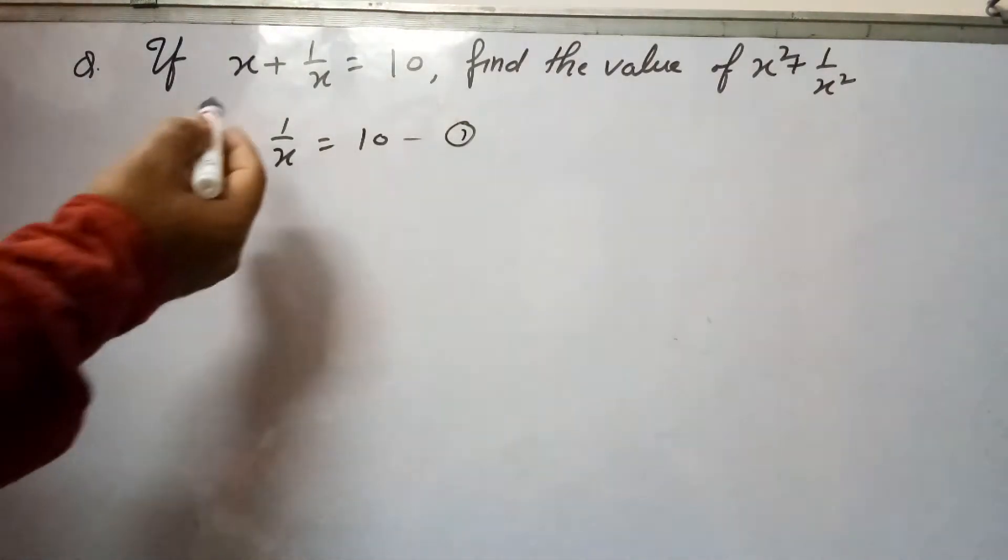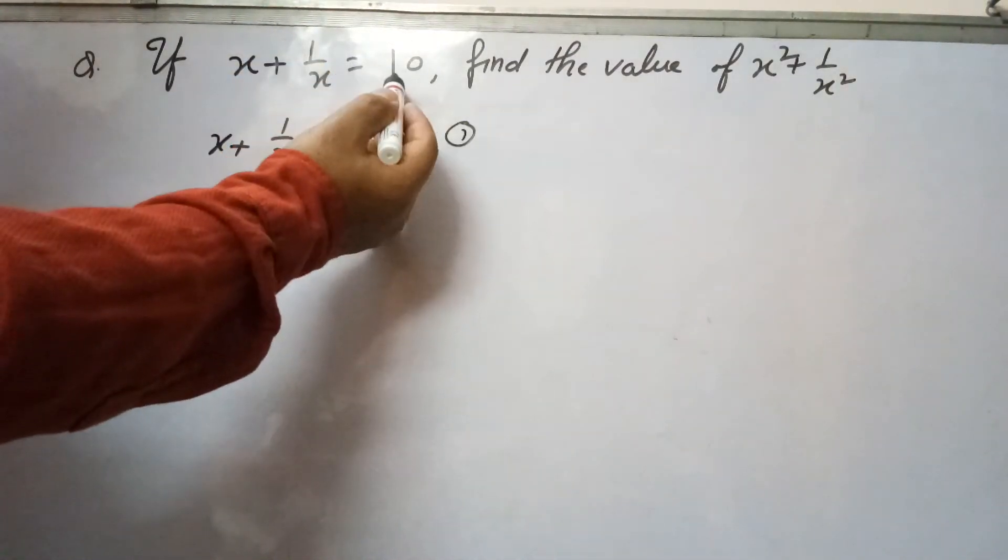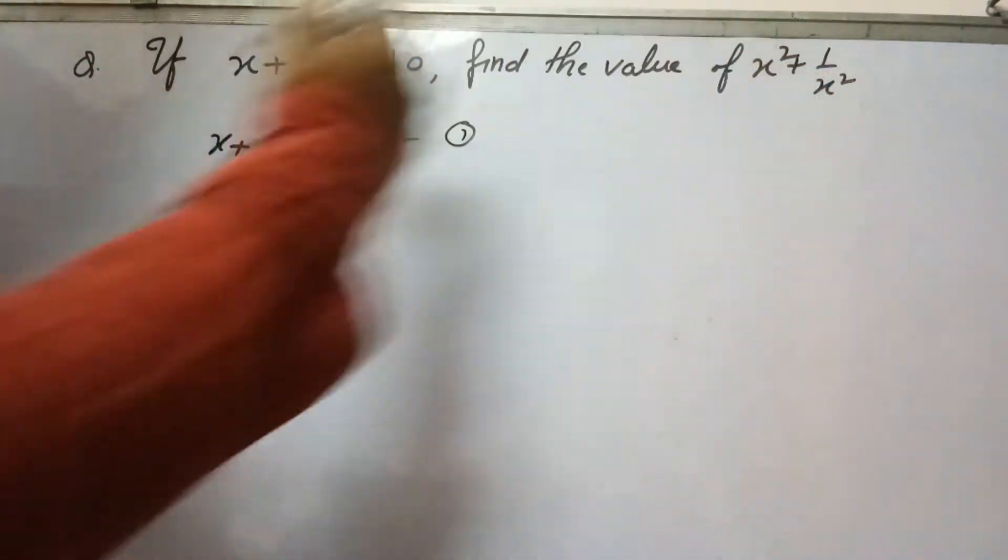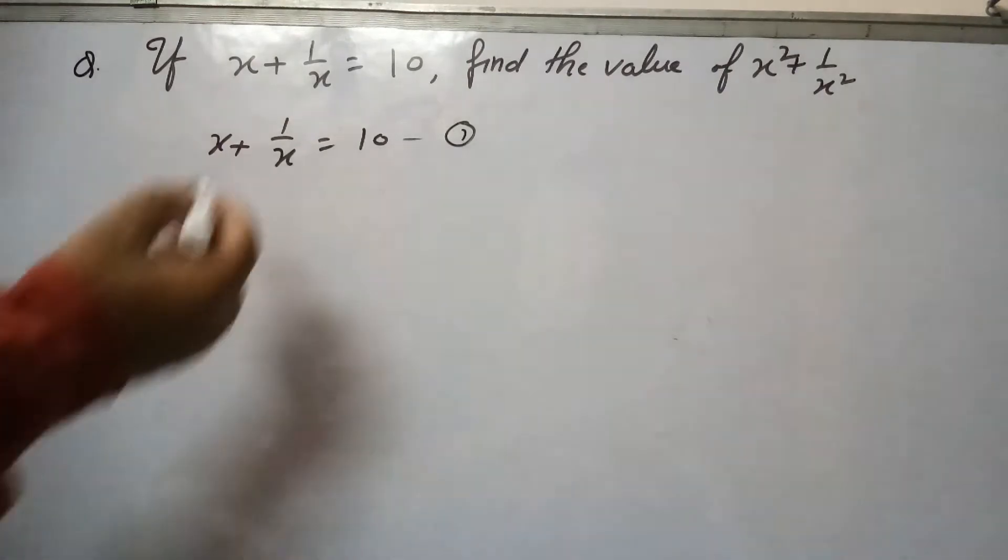So today my question is: if x plus 1 over x equals 10, find the value of x square plus 1 over x square. To achieve this x square plus 1 over x square, what we will do is square this equation on both sides.